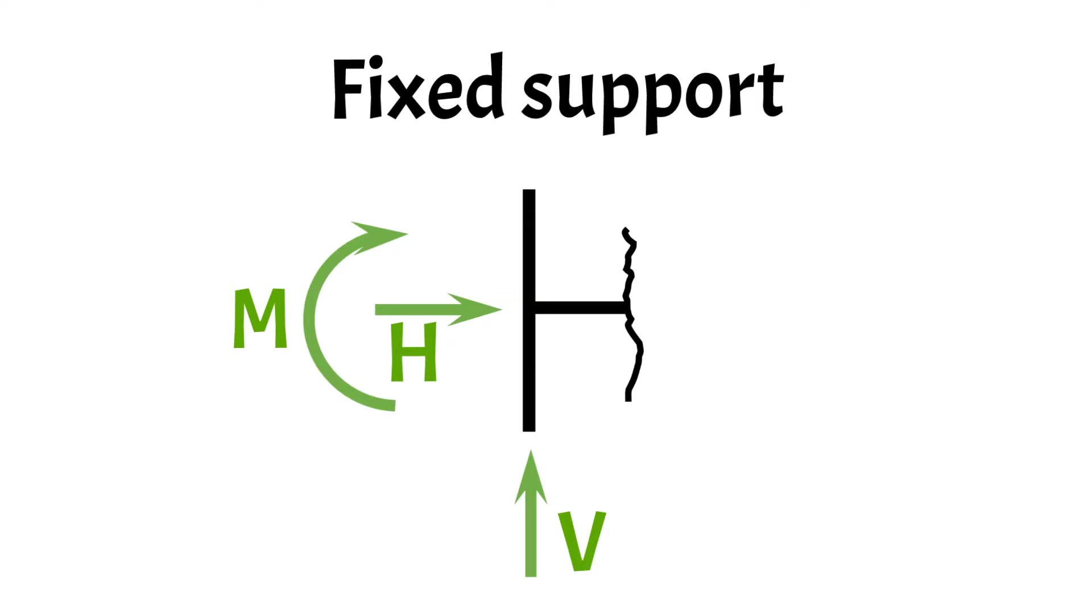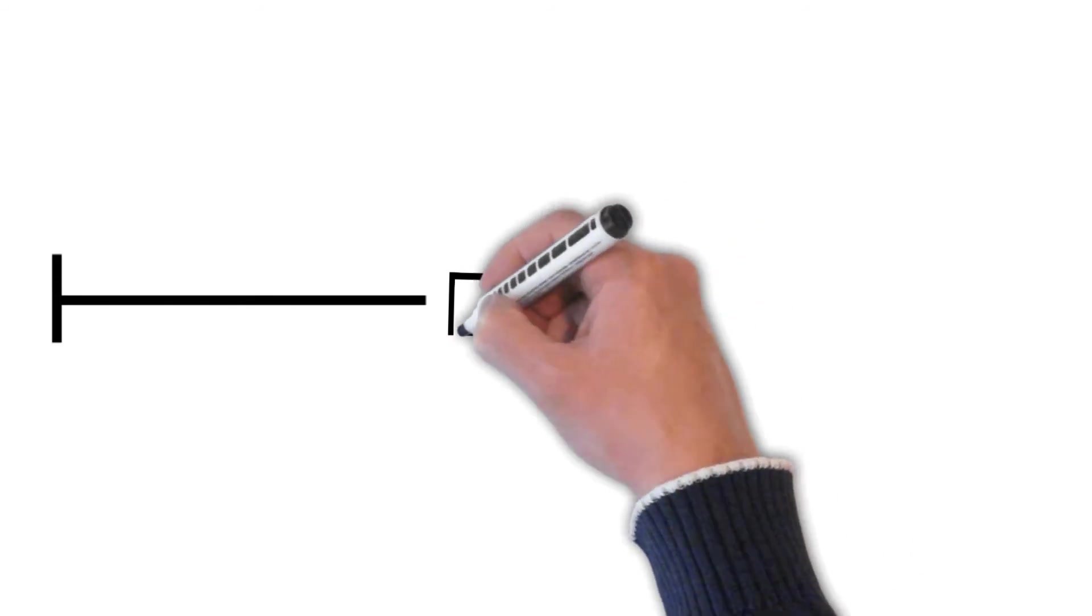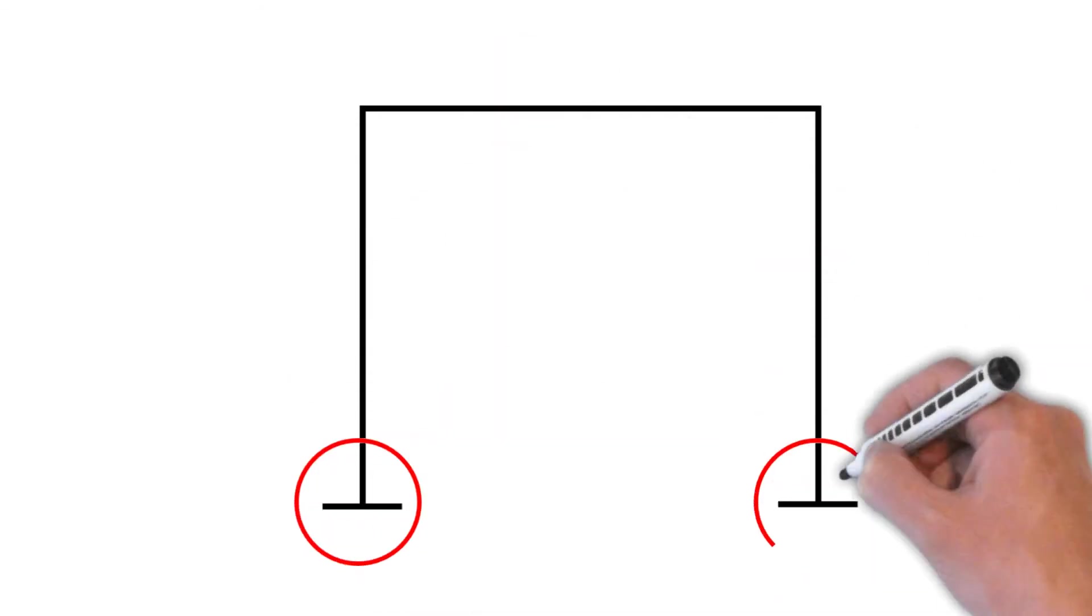The fixed support is often used to increase robustness, get unsupported spans like groove overhangs or to limit the deformations of a structure. The most common example of a fixed support is the cantilever beam, which is used for example in balconies or cranes. Another example where fixed supports are used are rigid frames, commonly used in manufacturing plants.